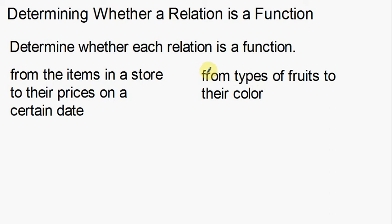These are two separate relations — one on the left, one on the right. I'll start with the one on the left: from the items in a store to their prices on a certain date. So we have items in a store. I go to the grocery store and pick up a couple of things — Doritos, cereal, a couple of things. So items you can get at the store: chips, Doritos, cereal.